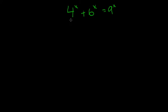Here's our viral problem of the day. We have 4 to the x plus 6 to the x equals 9 to the x, and we're supposed to solve for what x is over all real numbers.